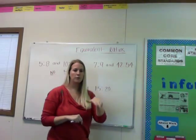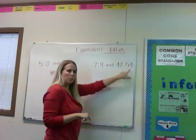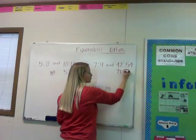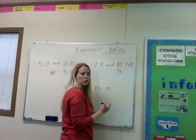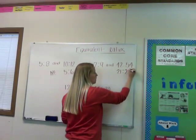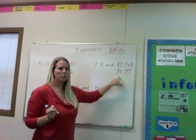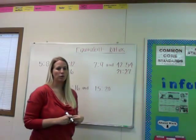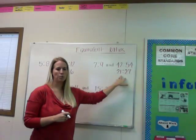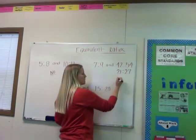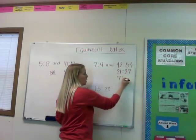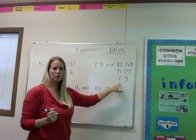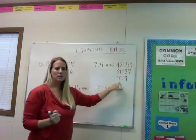I know because these are both even numbers that 2 can go into both of them. So I'm going to divide both sides by 2: 42 divided by 2 is 21, and 54 divided by 2 is 27. Then I'm going to ask myself, is there a number that can go into both 21 and 27? Yes, the number 3 can go into both. So 21 divided by 3 is 7, and 27 divided by 3 is 9. Is there a number that can go into both 7 and 9? The answer is no.